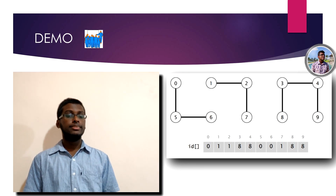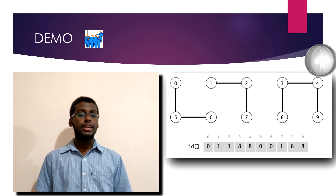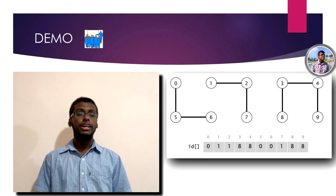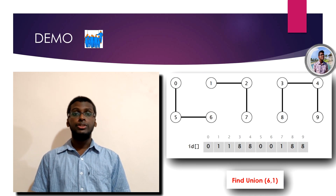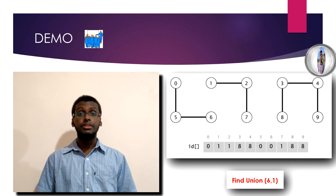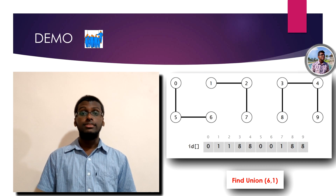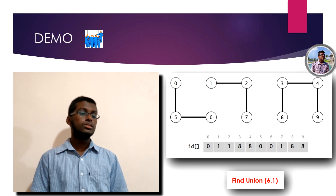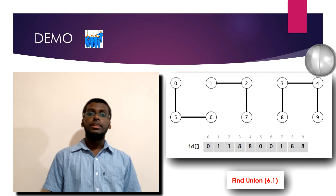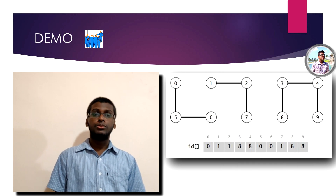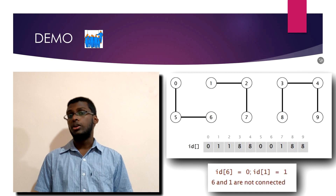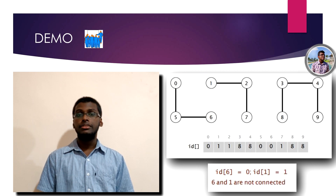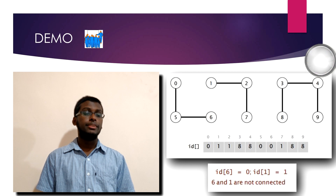You can see 6 and 1, 2 and 3, 7 and 8, and so on — they are not connected. In this demo, we want to find the union of 6 and 1, in other words, we want to connect 6 and 1. The first step in this connection process: we must make sure 6 and 1 are not already connected, meaning the ID of 6 and 1 cannot be the same.